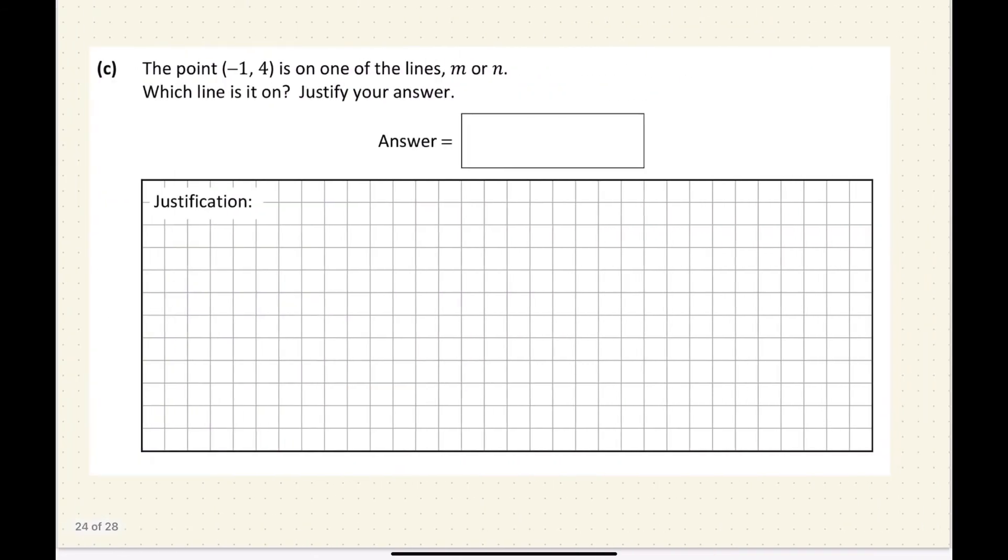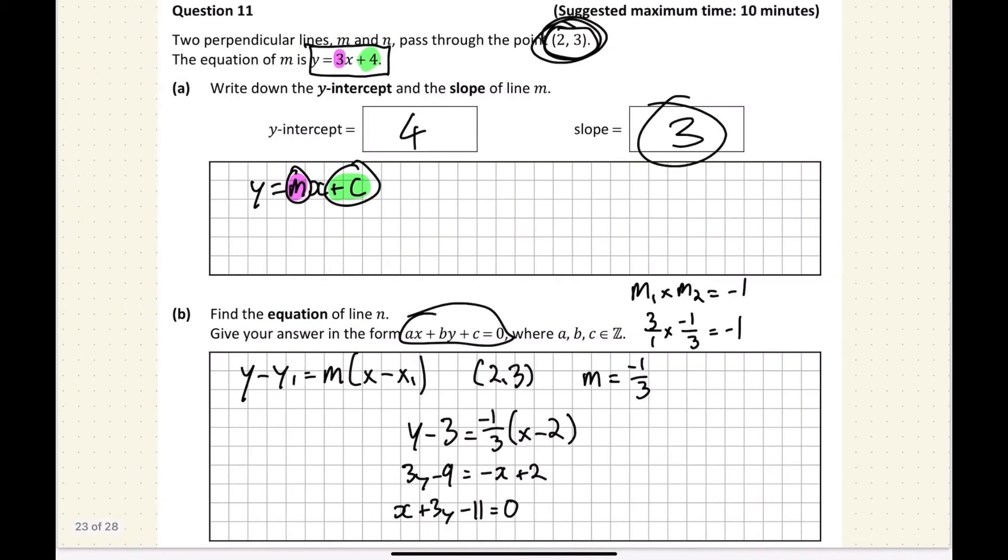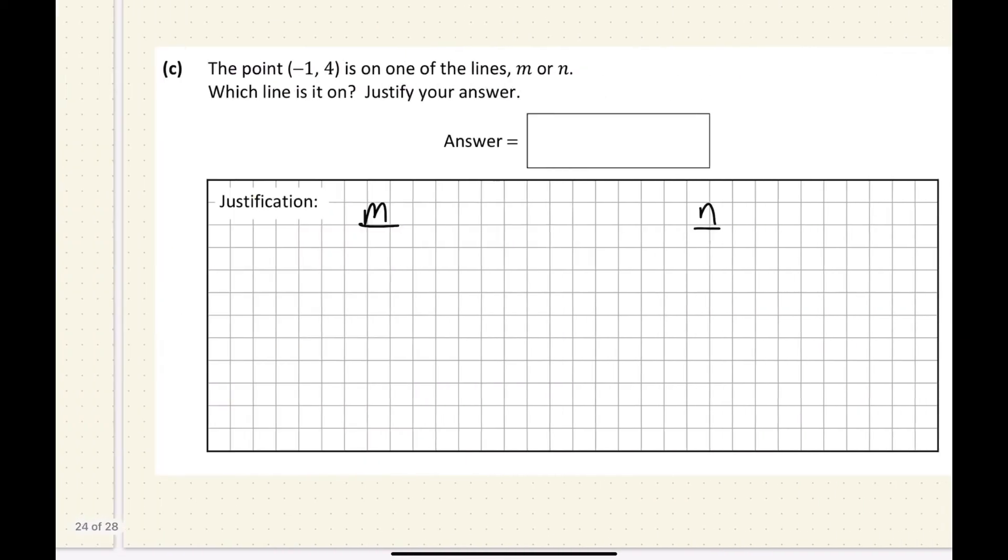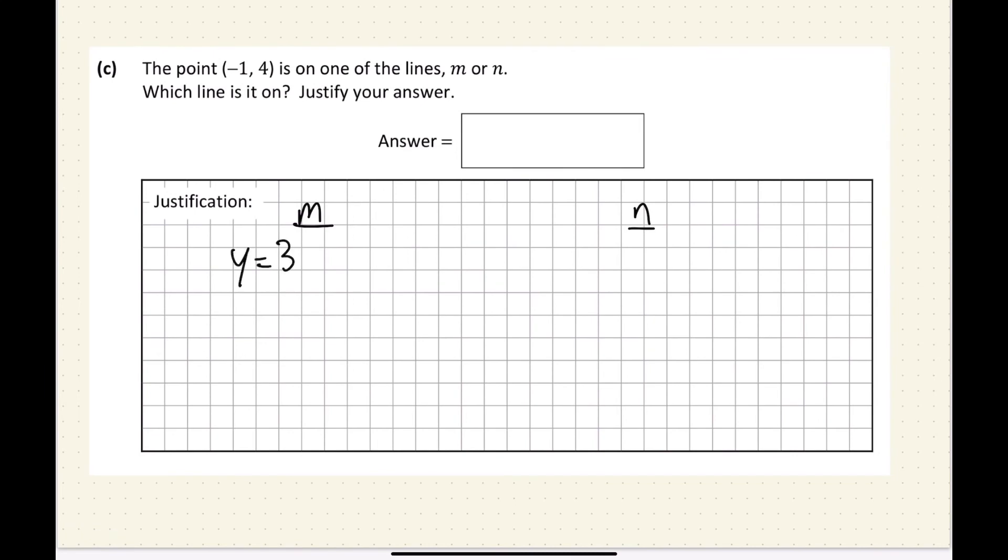So then this question says the point (-1, 4) is on one of the lines, m or n. Which line is it on? Okay. So let's try for m here and for n here. So we're going to need the equation of the line. So this one is y equals 3x plus 4. And this one we just worked out is x plus 3y minus 11 equals 0. So let's submit.